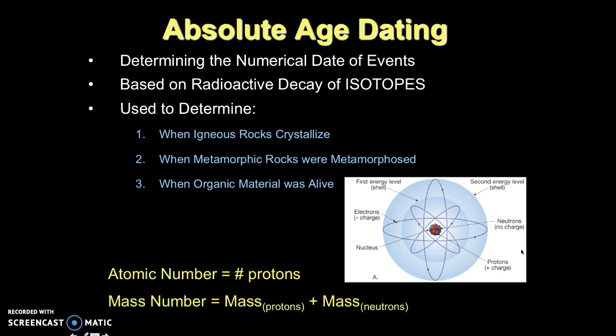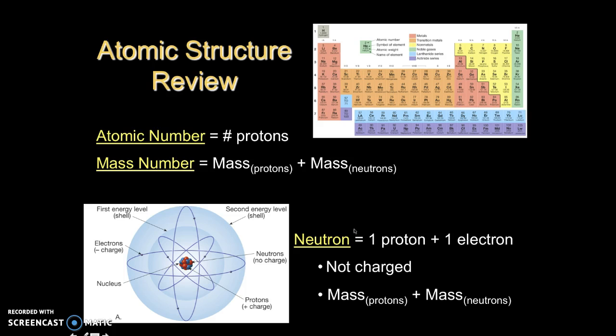To understand absolute age dating, we do quickly need to go over some chemistry review. What we're looking at here is a picture of the periodic table, and the reminder is that all of the elements in the periodic table are arranged by their atomic number. That number is listed at the top.